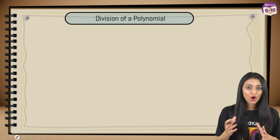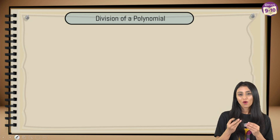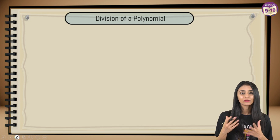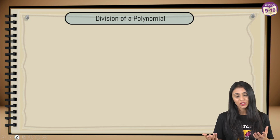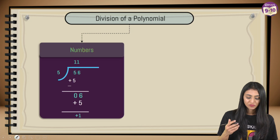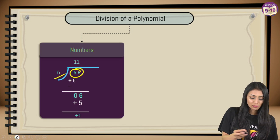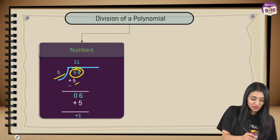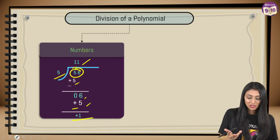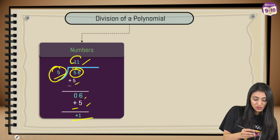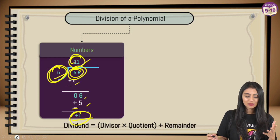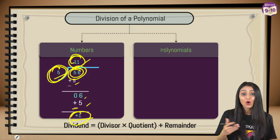When we talk about division of a polynomial, it can feel a little tricky. But let's first understand how we divide numbers. If I divide 56 by 5: 5 times 11 is 55, remainder is 1. So the dividend is 56, the divisor is 5, the quotient is 11, and the remainder is 1. In a similar manner we divide polynomials as well.